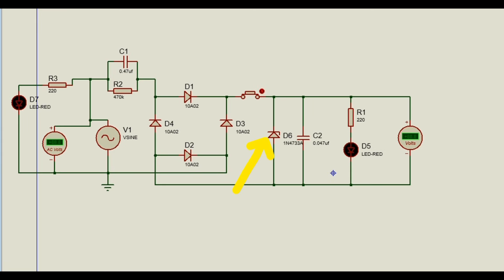When we add a Zener diode with a capacitor of certain values, the voltage output would be stable at about 5V.